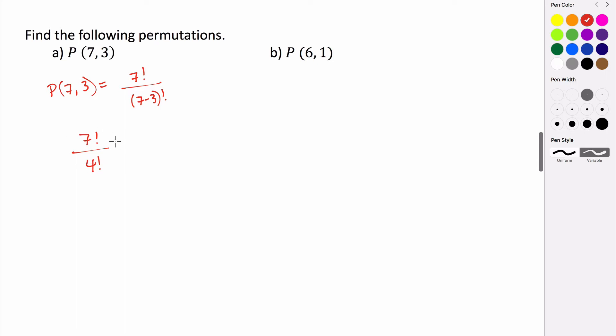At this point we want to write out this product. So this is 7 times 6 times 5 times 4 times 3 times 2 times 1, all of this divided by 4 times 3 times 2 times 1.